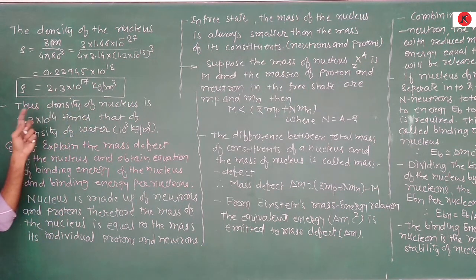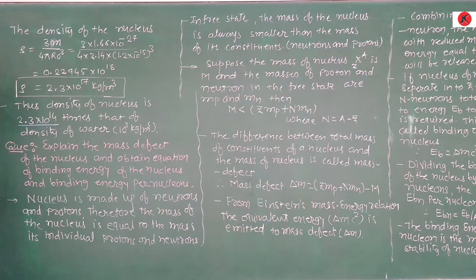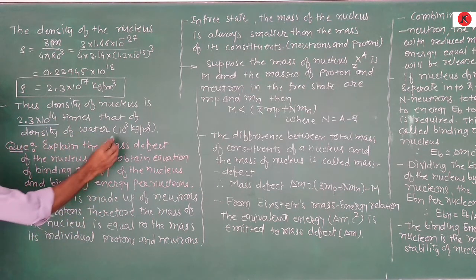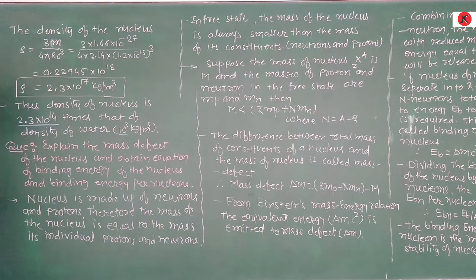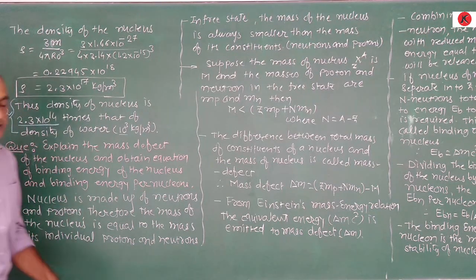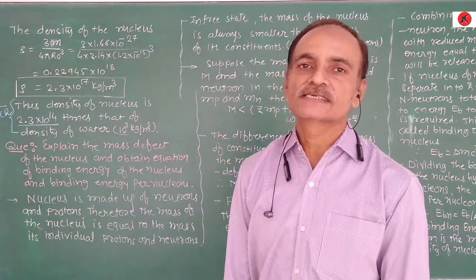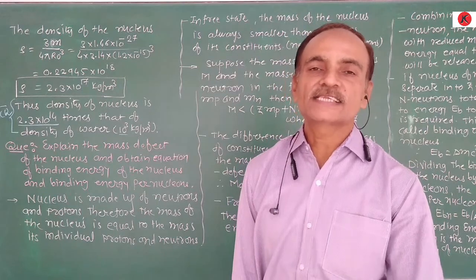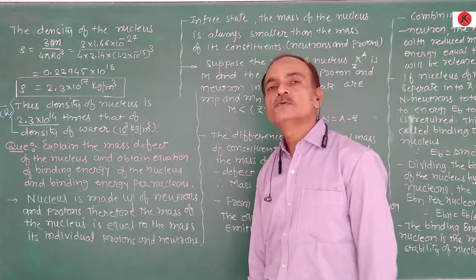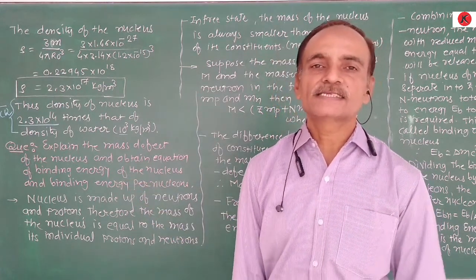Thus, the density of the nucleus is 2.3 × 10¹⁴ times the density of water. The nucleus is far denser than water because the density of water is only 10³ kg/m³, while the density of the nucleus is 2.3 × 10¹⁷ kg/m³. This comparison is also frequently asked in MCQ-type questions — approximately 10¹⁴ times more dense than water.